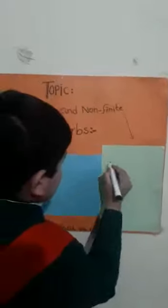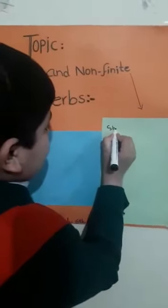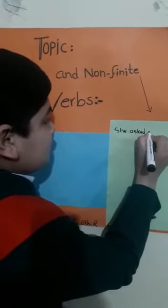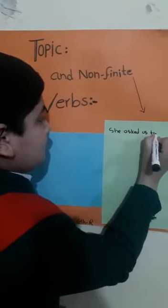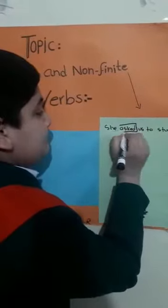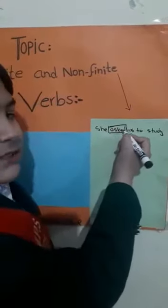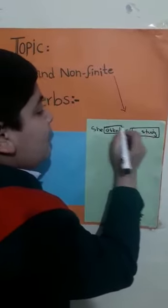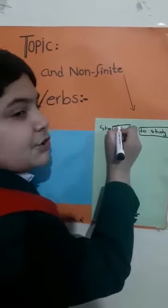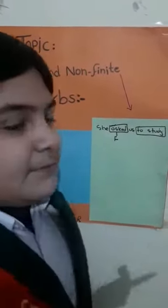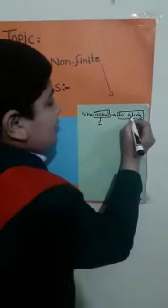For example: 'She asked us to study.' Here, 'asked' is a finite verb because it shows past tense. And 'to study' — a verb with 'to' before it is called a non-finite verb.